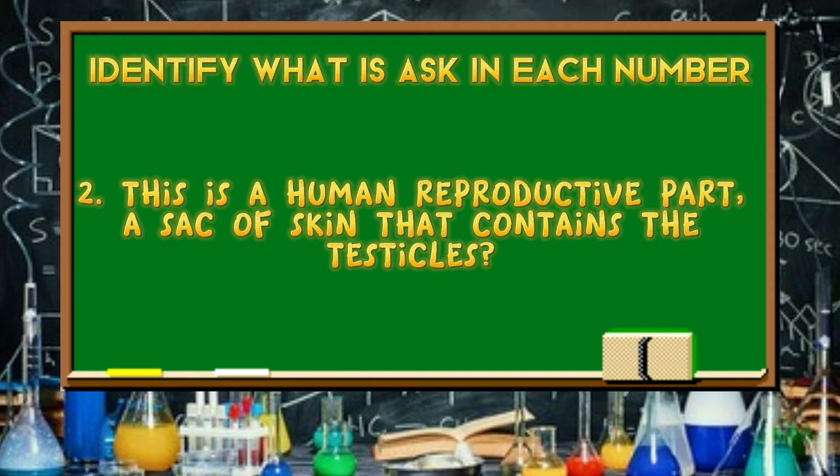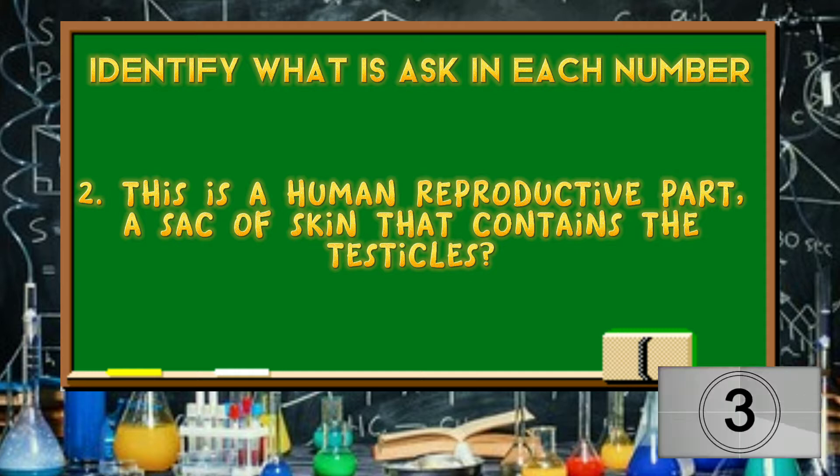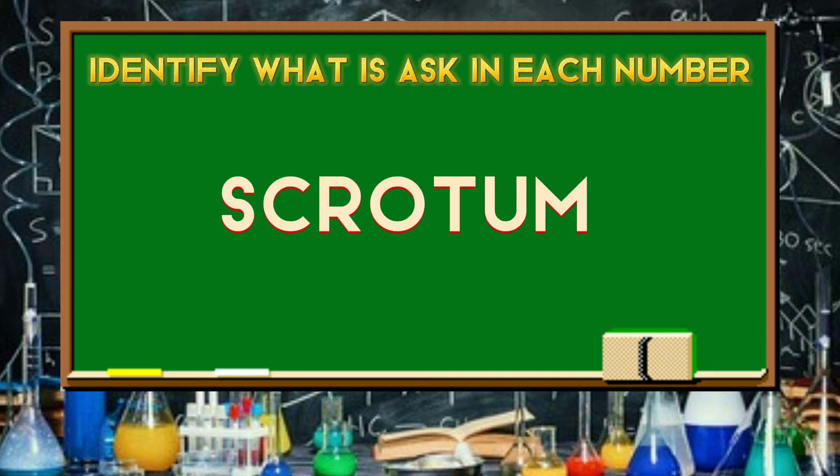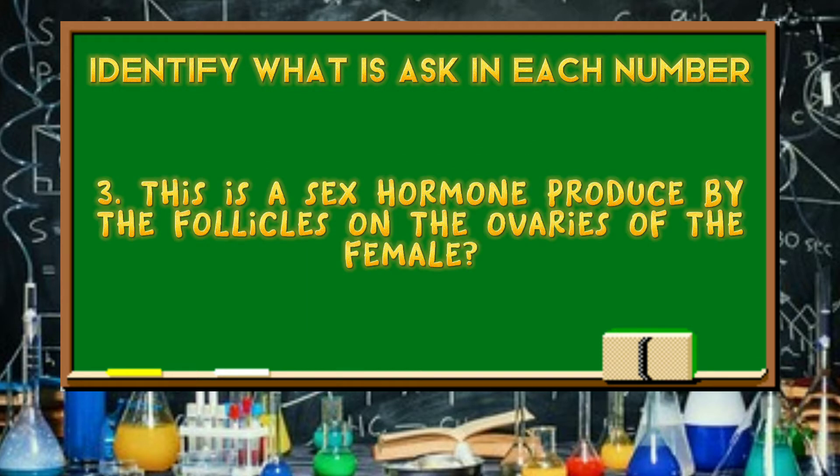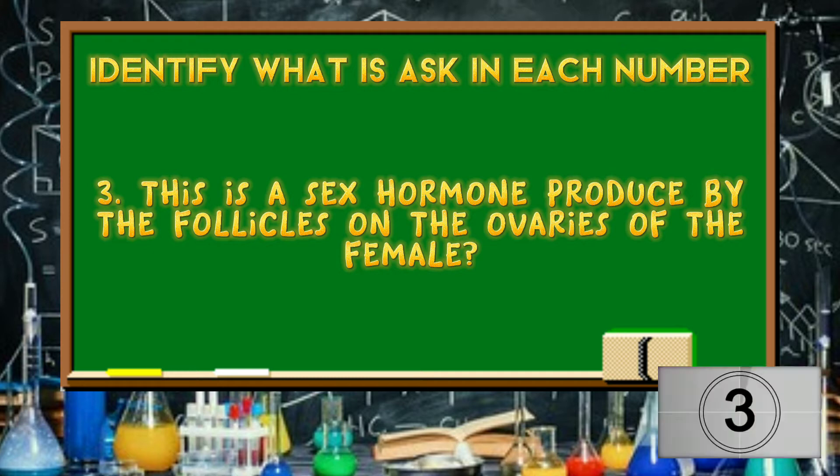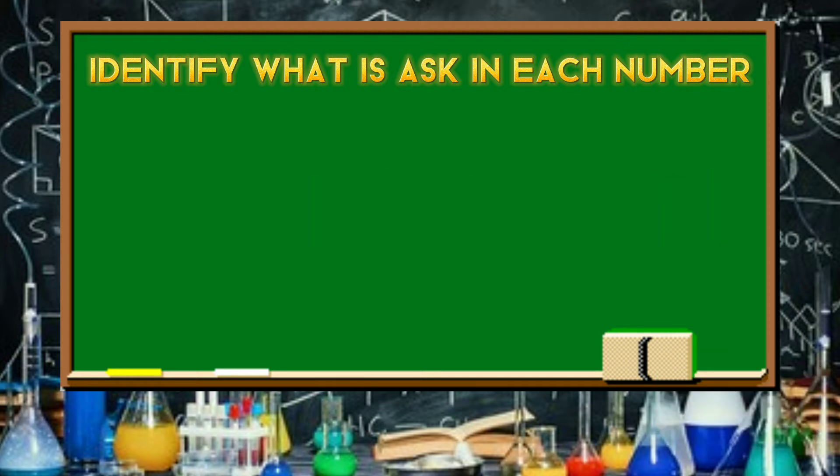This is a human reproductive part, a sack of skin that contains the testicles. Scrotum. This is a sex hormone produced by the follicles on the ovaries of the female. Estrogen.